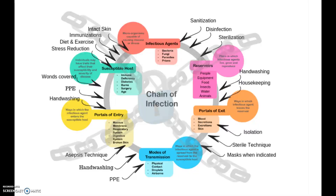There are six parts to the infection cycle, and we usually start right at the top with number one: the infectious agent, which is basically any microorganism that is capable of creating a disease — whether it's bacteria, fungus, parasites, prions, helminths, all of the above. If you don't have something like that, you don't have an infection. We all know they're out there by the millions — they're everywhere.